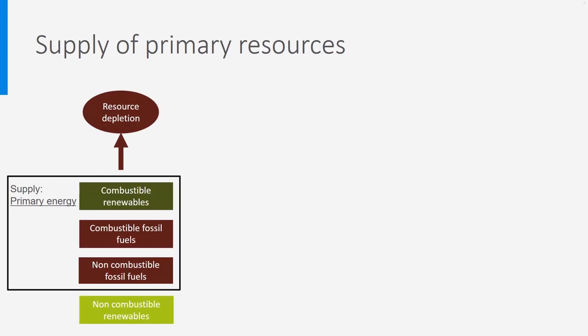Let's start with the supply side, the natural resources needed to produce energy. These natural resources are divided into four categories. Two of them are fossil fuels, indicated by a brown color. Two of them are renewables, given a green color. Resource depletion takes place when fossil fuels are used, that's why it has been given a brown color too. When renewables are used, there is by definition no resource depletion. Now let's take a closer look at these natural resources. First, the renewables. Combustible renewables are converted into energy by being burned — think for instance of wood pellets, biomass or biogas.